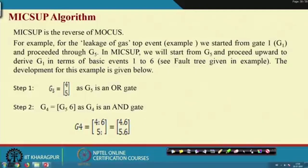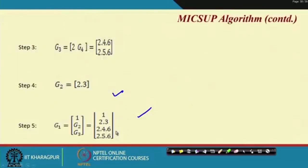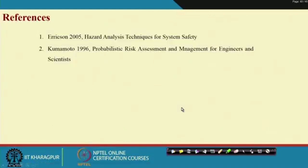The MICUS algorithm is just the reverse. For the leakage of gas example, MOCAS started from gate G1 (the top) and proceeded through gate G5. In MICUS, we start from G5 (the lowest gate) and proceed upward. G5 is an OR gate, G4 is an AND gate, and so on. Ultimately you get the same minimal cut sets. If you have any queries regarding the cut set method, please use the forum. Thank you very much.